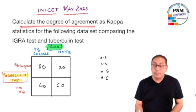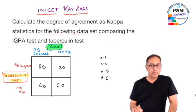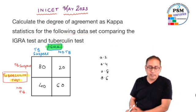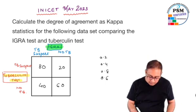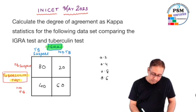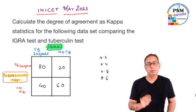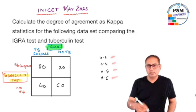The question in the exam was: Calculate the degree of agreement as kappa statistics for the following data set comparing the IGRA and the tuberculin test. Some people were given IGRA test, some were given the tuberculin test, and they wanted to check the level of agreement. Some people were TB suspect and non-TB by IGRA, TB suspect and no TB by tuberculin test.